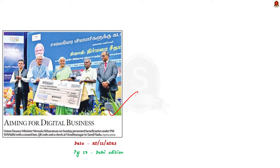This news article talks about the PM SVANidhi scheme. Recently, the beneficiaries of the scheme were provided with a sound box, QR code, and a cheque. In this discussion, let us understand some features of the PM SVANidhi scheme. PM SVANidhi stands for PM Street Vendors AtmaNirbhar Nidhi — where Atma Nirbhar means self-reliance and Nidhi means fund or loan in this context.